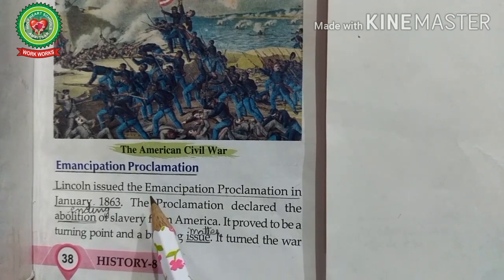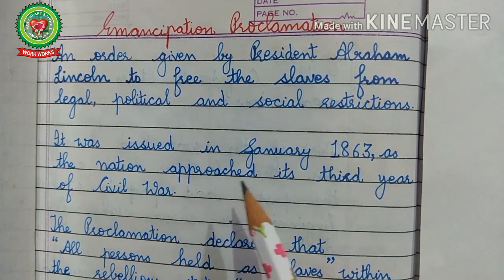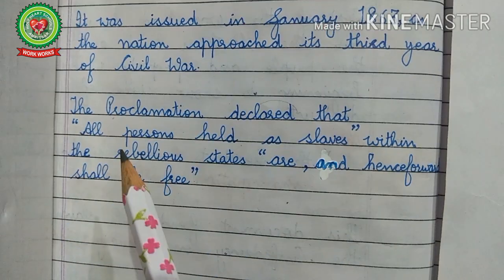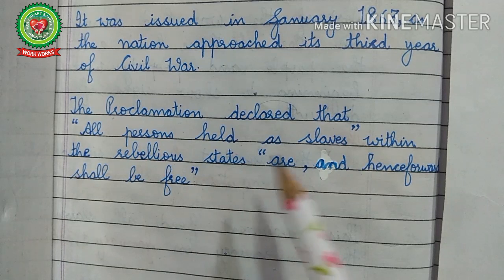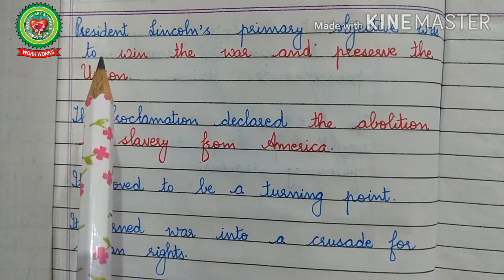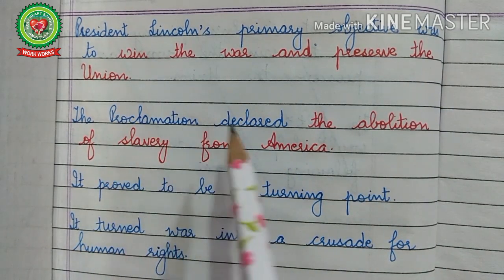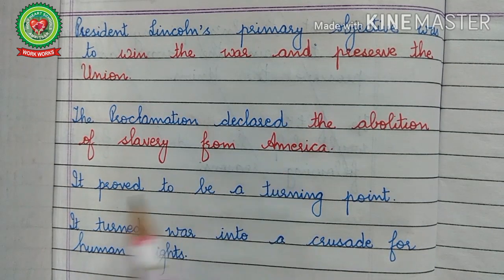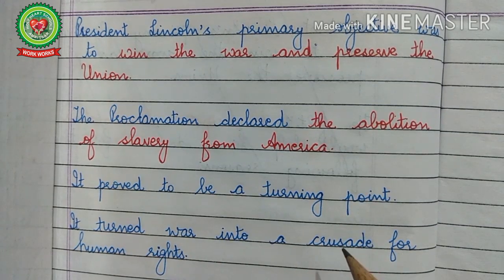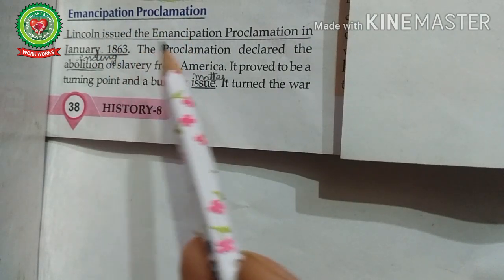Before reading, let us discuss the main points related to the Emancipation Proclamation. It was issued in January 1863, as the nation approached its third year of civil war. The proclamation declared that all persons held as slaves within the rebellious states are and henceforward shall be free. President Lincoln's primary objective was to win the war and preserve the Union. The proclamation declared the abolition of slavery from America. It proved to be a turning point — it turned the war into a crusade for human rights; crusade means holy war.